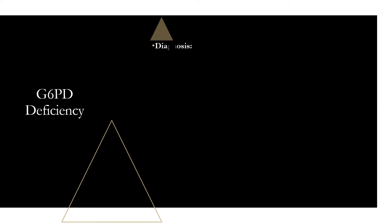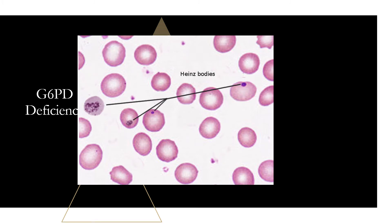For diagnosis, you first get a peripheral smear. It will show Heinz bodies — clumps of denatured hemoglobin attached to the erythrocyte cell membrane, left over from the oxidative injury. These appear as small dots within the red blood cell.